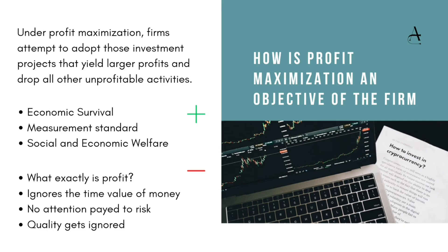How is profit maximization an objective of the firm? This was also one of the previous year's exam questions. Under profit maximization, the firm aims to maximize its profit. In order to do so, it has to judiciously use its resources so that most or all resources are involved in activities that maximize production. Any other projects or products which use the same input will be cut out. Firms will adopt only those investment projects which yield larger profits and will drop all other unprofitable activities.